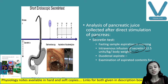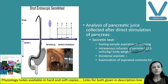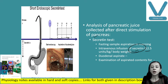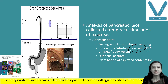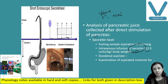After secretin administration, duodenal aspirate is collected at intervals of every 10 minutes over the next 80 minutes. The aspirated contents are then examined for volume of the content, pH of the content, bicarbonate secretion, and enzymes.